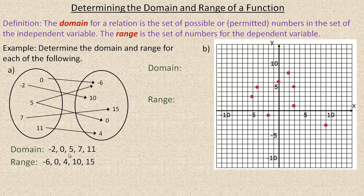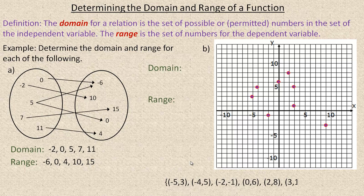So when you have a mapping diagram, that's all you do. These are the numbers in the domain, and these are the numbers in the range. It's similar if you have a list of ordered pairs. Now this is a graph that has several different ordered pairs — points — so I'm going to list them as ordered pairs to make writing the domain easier.